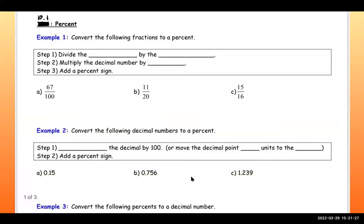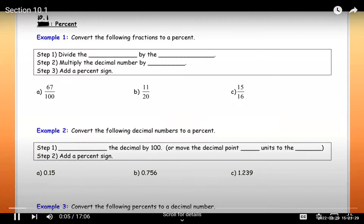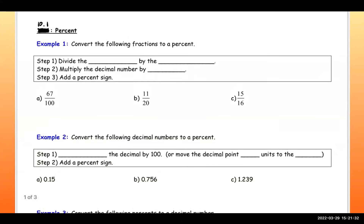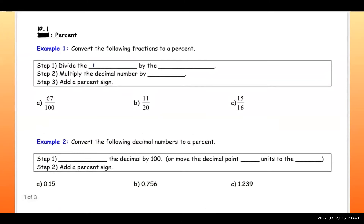This is section 10.1 on percent. We'll be looking at percents and applications. For this example, convert the following fractions to a percent: divide the numerator by the denominator — the numerator is the top number, the denominator is the bottom number — then multiply the decimal number by 100 and add a percent sign.